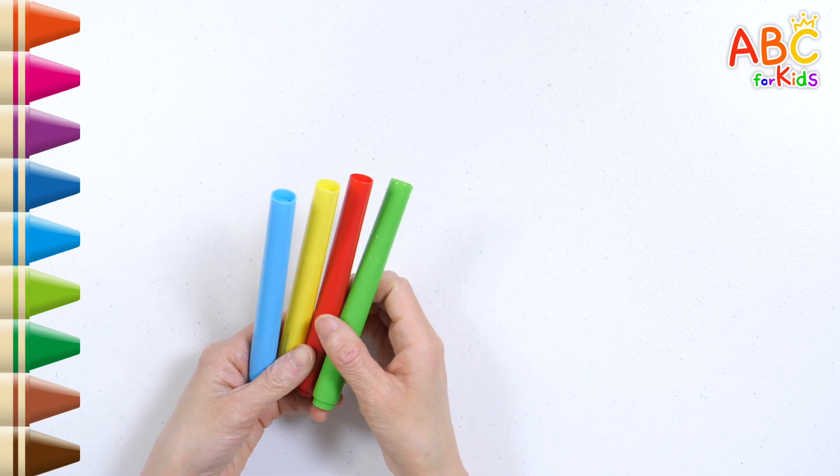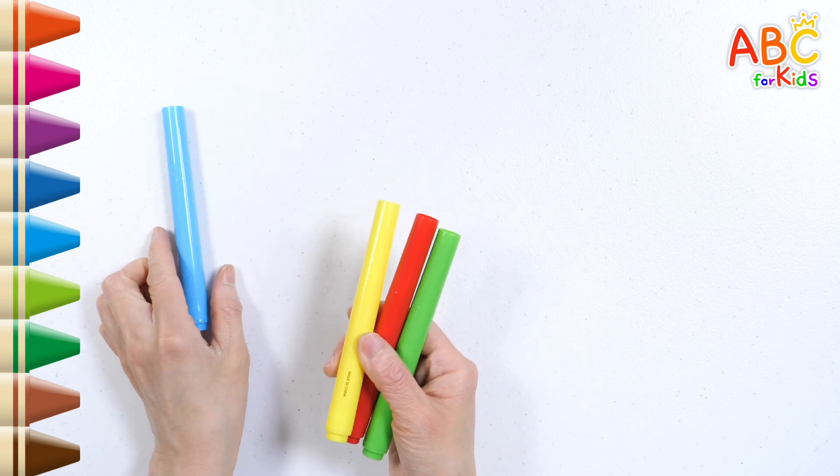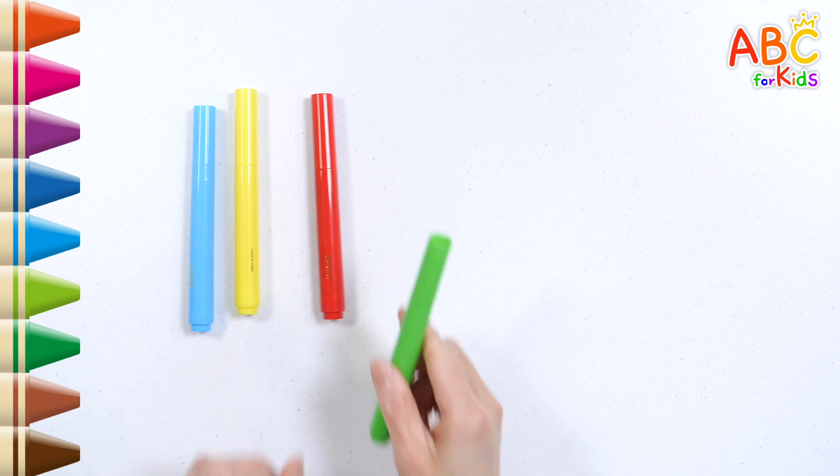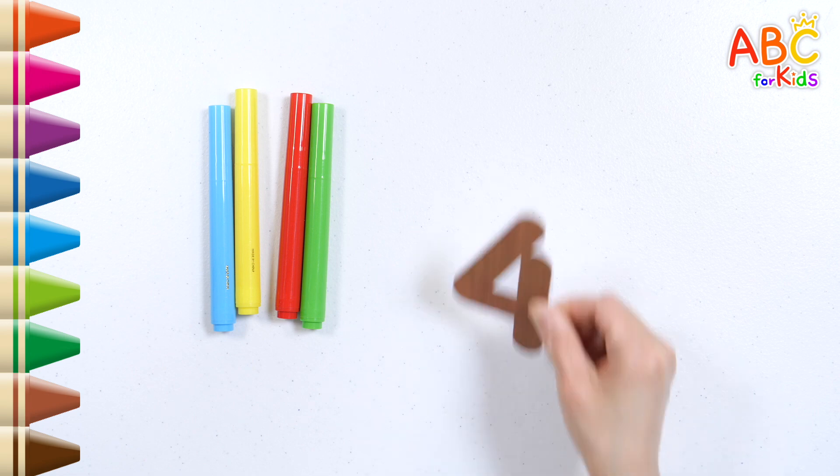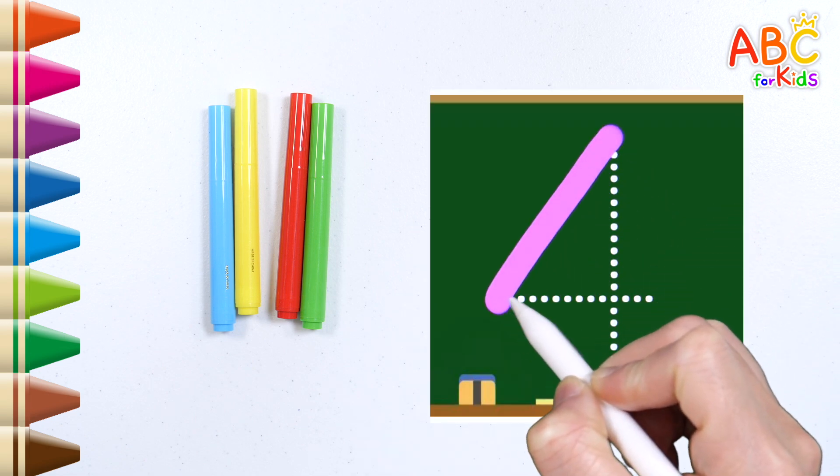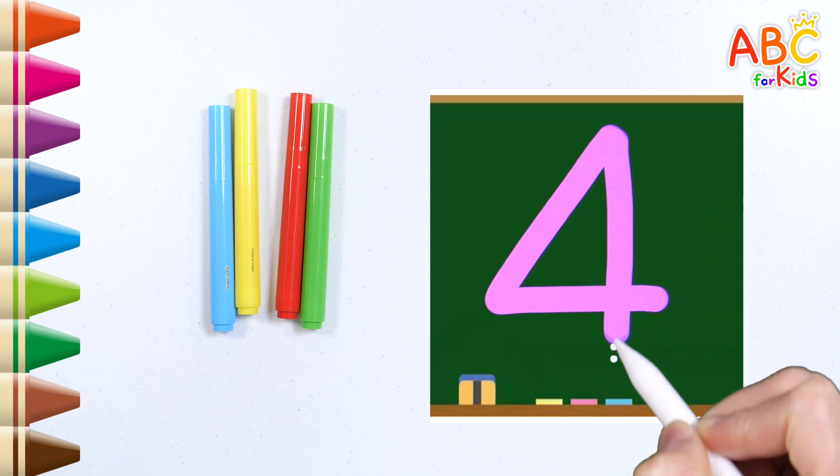It's a felt tip pen. Let's count how many. One, two, three, four. A total of four felt tip pens. Let's write the number. Four.